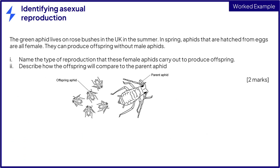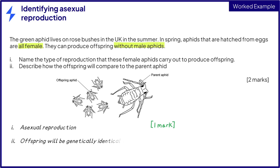Here we can see a second exam-style question. The green aphid lives on rose bushes in the UK in the summer. In spring, aphids that are hatched from eggs are all female. They can produce offspring without male aphids. Name the type of reproduction that these female aphids carry out to produce offspring, and describe how the offspring will compare to the parent aphid — this is for two marks. We can see from the information provided that no males are involved, only females, so one parent is required, meaning this must be asexual reproduction. This means that the offspring will all be genetically identical to the parent aphid.